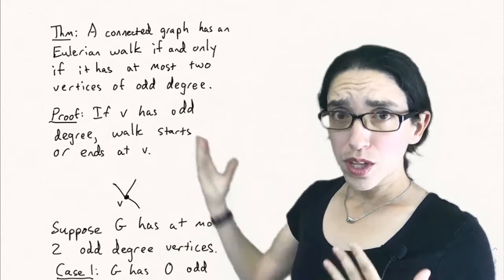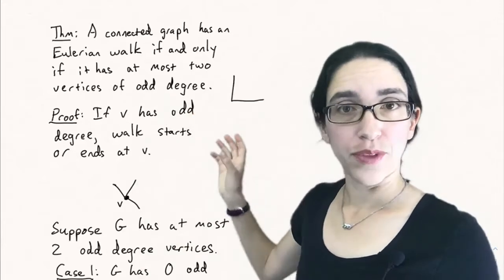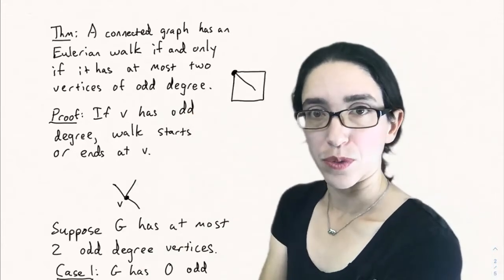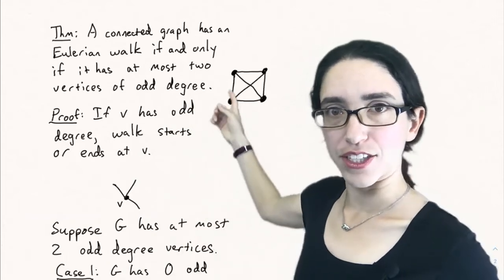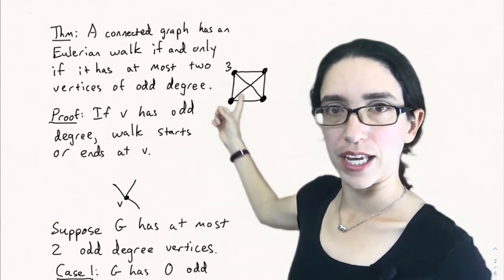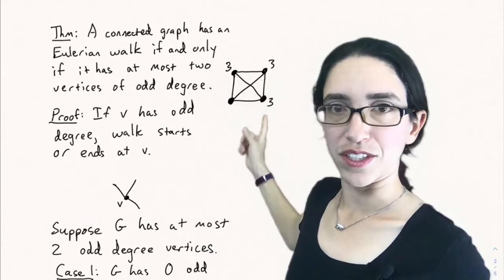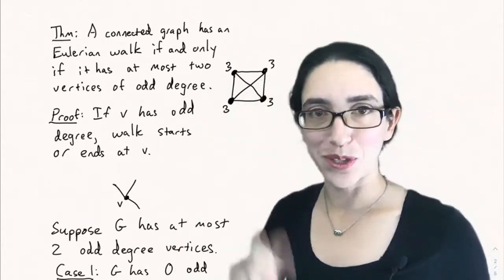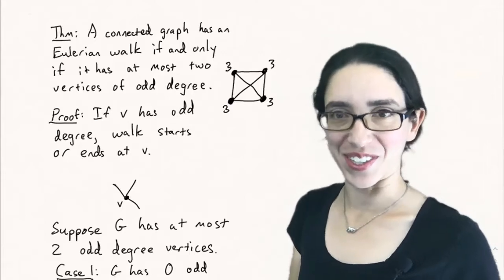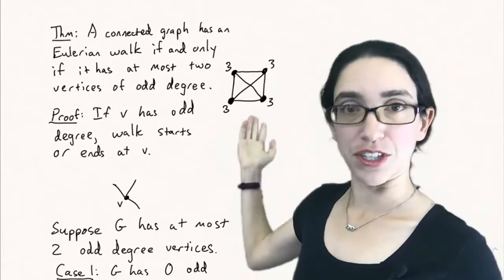We can look at the example of k4. What were the vertices and what were their degrees? There were four vertices and each one has three edges attached to it. This one has three edges coming out of it, so does this one, so does this one, so does this one by symmetry. That has four vertices of odd degree. We're only allowed at most two to have an Eulerian walk by this theorem. So that explains it for k4.